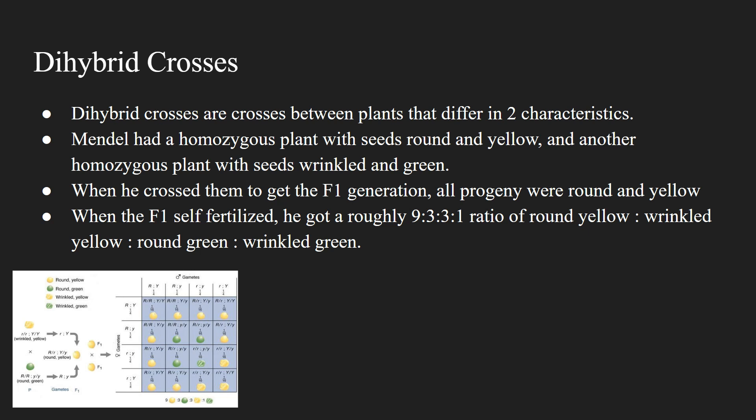This means that the F1 generation again inherited genetic factors from both parents, but only round and yellow phenotypes were shown. We can conclude that round and yellow were the dominant types.